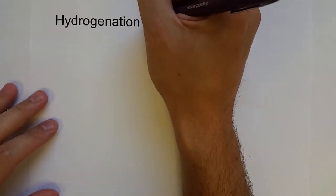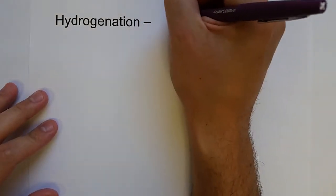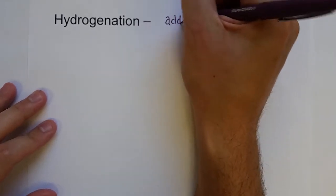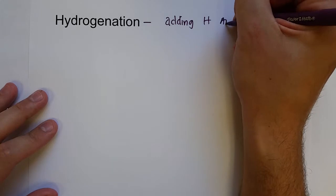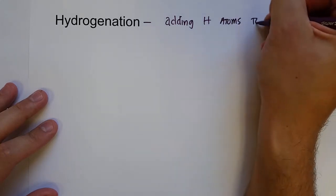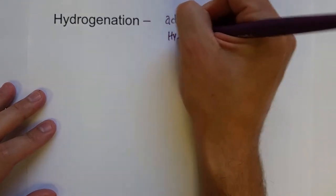All right, two reactions involving organic compounds is what we're going to talk about next. The first one is hydrogenation, and that is essentially just adding hydrogen atoms to organic molecule hydrocarbons that contain double bonds.